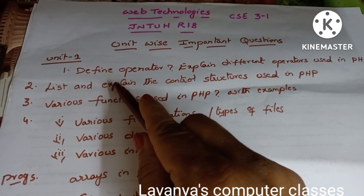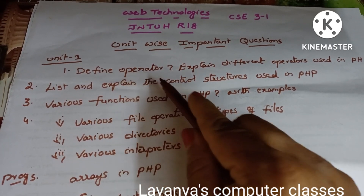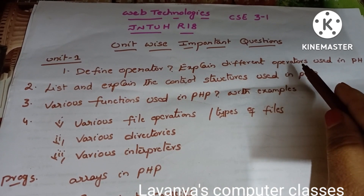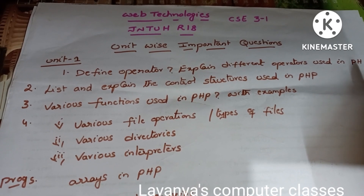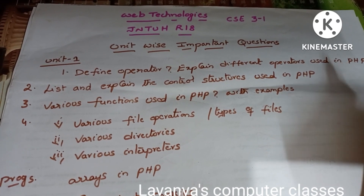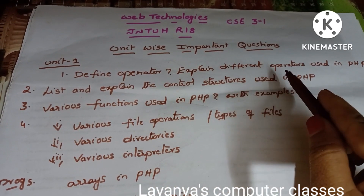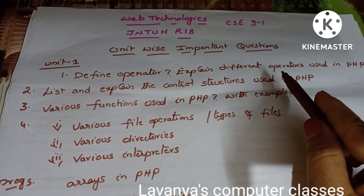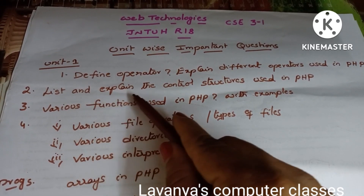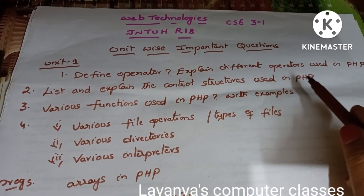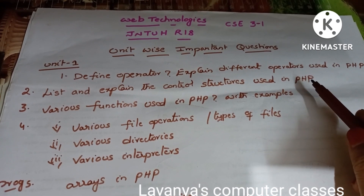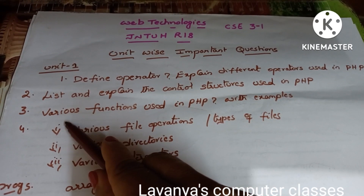Unit 1 questions: the first question is define operator and explain different operators used in PHP. First unit is totally PHP, so what is an operator and different types of operators used in PHP.